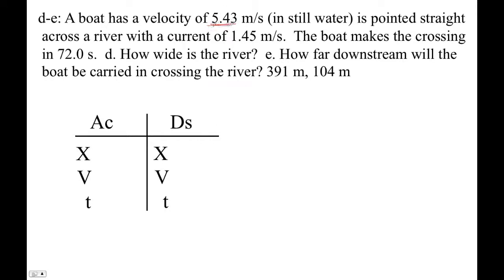The boat has a velocity of 5.43 meters per second. It's pointed straight across. We've got the current, and it crosses in a certain amount of time. So this velocity here is 5.43.